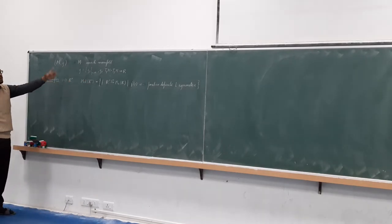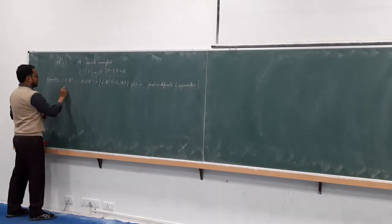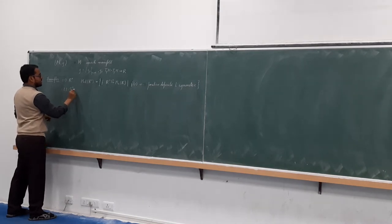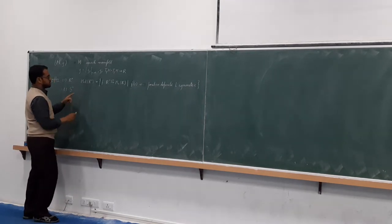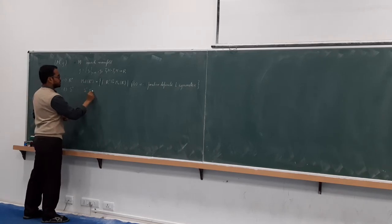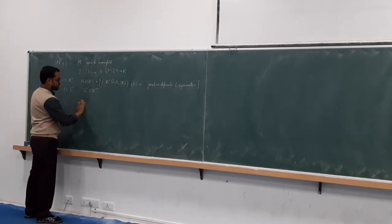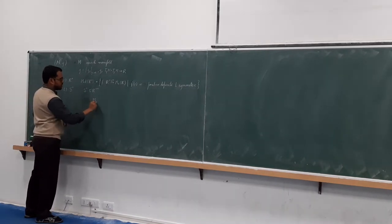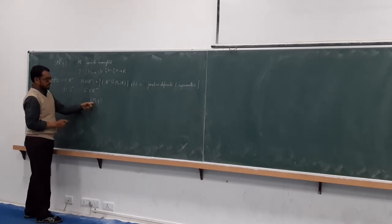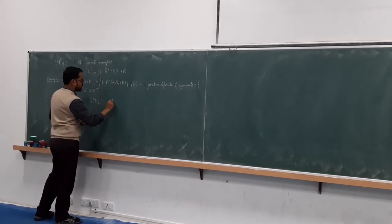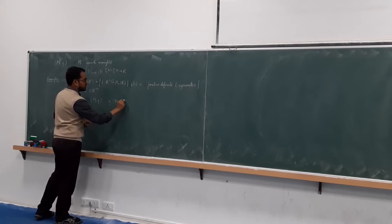We did this for n equal to 1, but the same thing holds for general n. Example 2: Sⁿ. Sⁿ is a subspace of Rⁿ⁺¹. Whenever you have a Riemannian metric on M, where M is a manifold, G can be thought of as a smooth map, and it is an exercise to check this is a manifold.